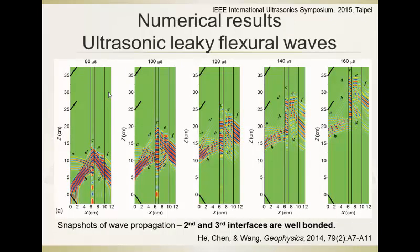Here are the numerical simulations. First, we investigate the snapshot of wave propagation in the case where both the second and third interfaces are well bonded. There are several wave components in the snapshot. We notice that the wavefront labeled C, propagating along the casing, represents the flexural waves. This type of guided wave is leaky, meaning it radiates energy inside and outside the casing during propagation. The wave energy radiated outside the casing produces reflections at the interface between the cement and the formation, which then transmit back into the casing and regenerate the flexural wave.